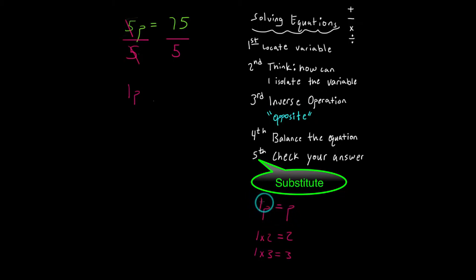So rather than writing down one times whatever variable you're using, remember, you're going to be dealing with a lot of different multiplication equations. So rather than writing one times p, just leave it as p, we're going to think of this as hiding the one. So I'm going to go ahead and just hide that one.